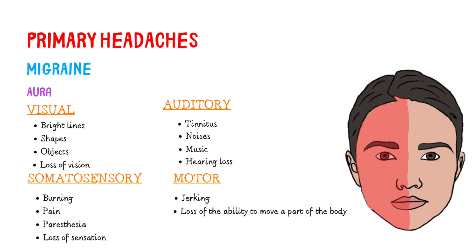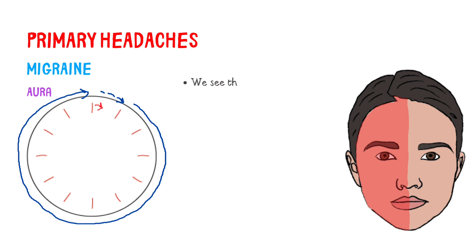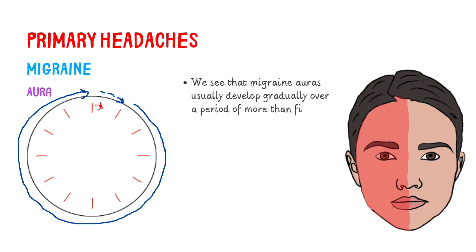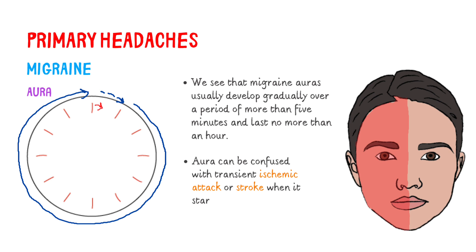You can see the aura as a group of symptoms that act like warning signals that a migraine headache is about to start. Auras are usually visual but can also be sensory, verbal, or motor disturbances. Migraine auras usually develop gradually over more than five minutes and last no more than an hour, though auras can rarely develop more rapidly. Aura can be confused with transient ischemic attack or stroke when it starts acutely. Some patients may have isolated auras without headache.